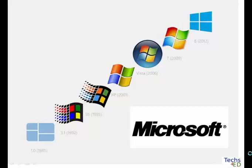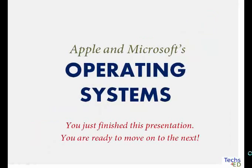Prior to Windows 8.1 is Windows 7, and prior to Windows 7 is Windows Vista, and so forth. So now that you know what an operating system is and what Mac and Windows are, you are ready to move on to the next video about operating systems on personal computers, on servers, and handheld devices.